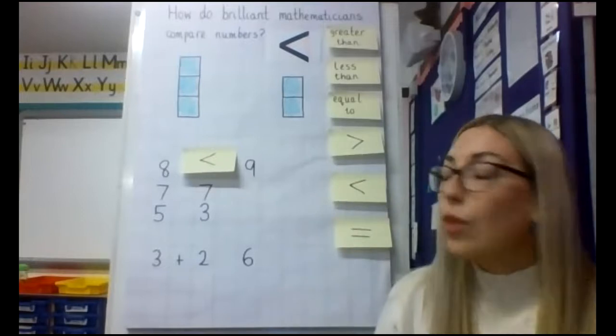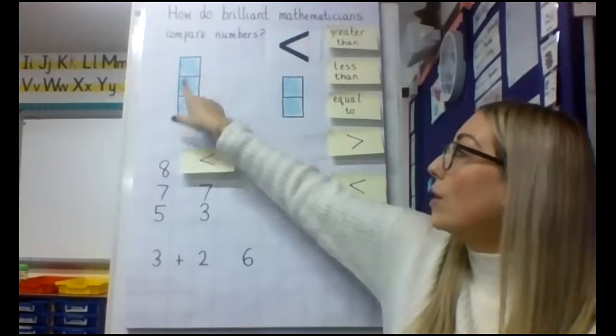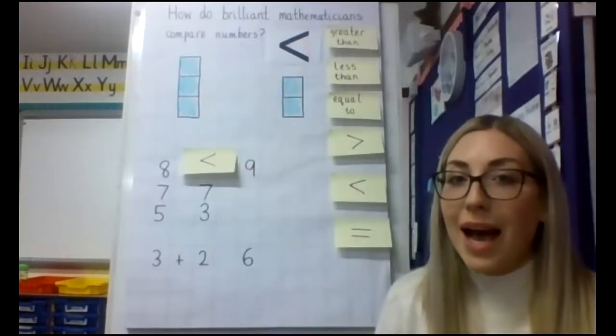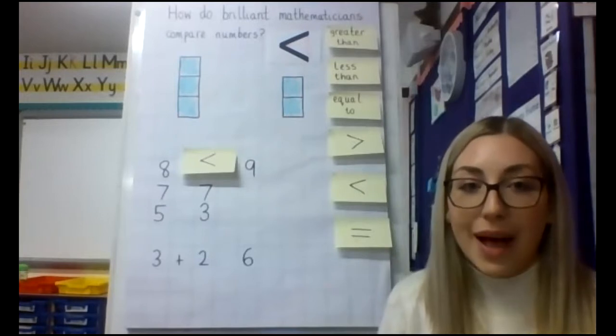So for example, on the board you can see that we have got one, two, three on this side and two on the other side.